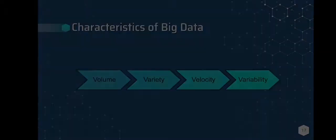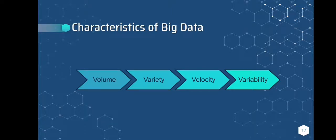What are the characteristics of big data? There are four characteristics: volume, variety, velocity, and variability. Volume refers to the massive amount of information — the size of the data is very important in determining its value, and whether a particular data set can be considered big data is determined by its volume. Variety, the next characteristic, refers to a wide range of data sources and data types, both structured and unstructured.